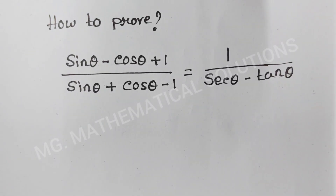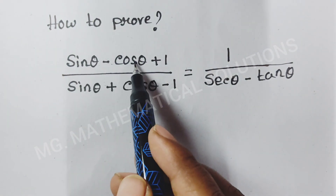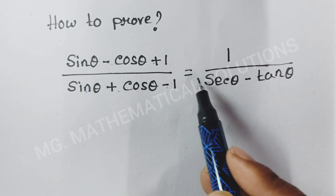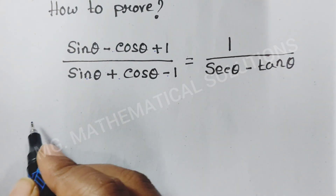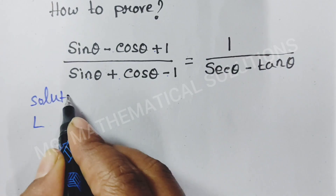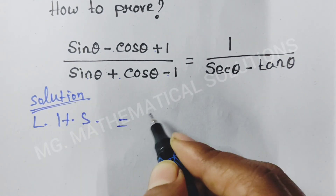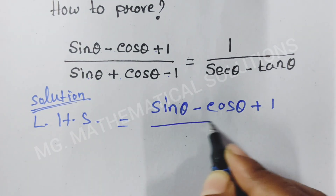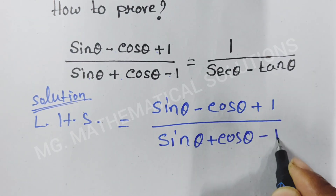Hi students, today I solve a nice trigonometric problem which is how to prove sin θ minus cos θ plus 1 by sin θ plus cos θ minus 1 equal to 1 by sec θ minus tan θ. First, we write the left hand side: sin θ minus cos θ plus 1 by sin θ plus cos θ minus 1.